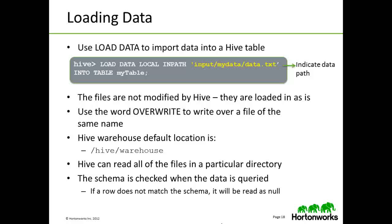The location of the data warehouse, or more specifically the name of the data warehouse, is set by a property. Here we will simply use hive/warehouse. Hive can read all of the files in this particular directory. The schema is checked when the data is queried, so if a row does not match the schema, Hive will read it as null.